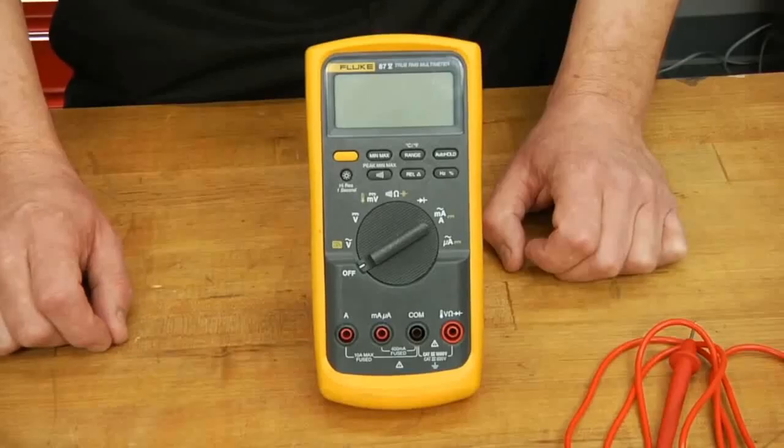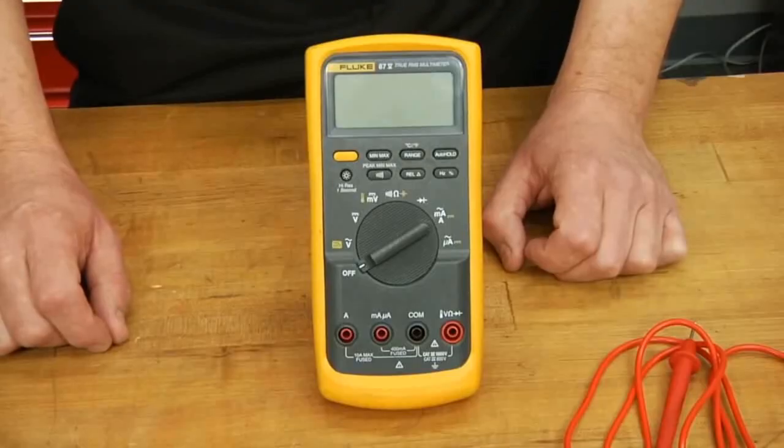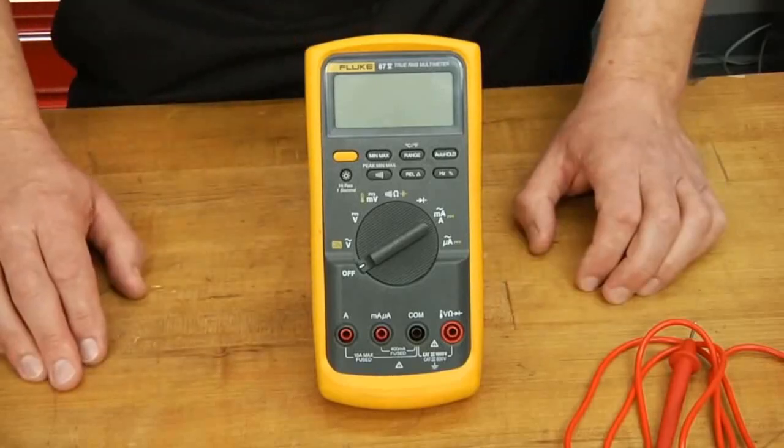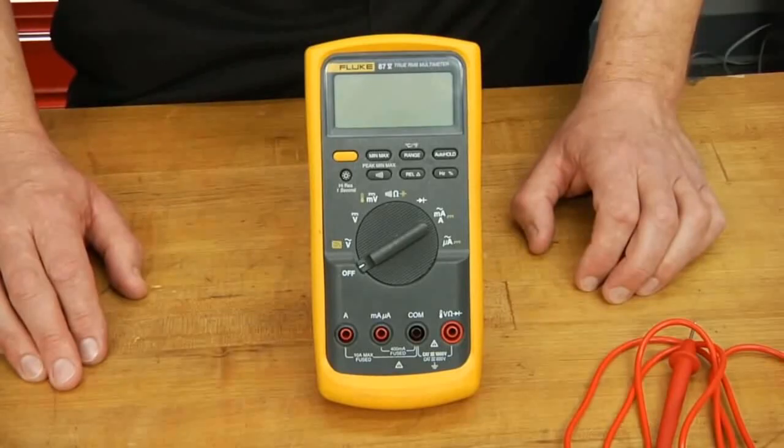Before we actually measure current on a circuit, let's talk a little bit about the tool we use to do that. For our purposes, we'll be using a Fluke 87 digital multimeter. Your meter may differ slightly, but the basic operation should be the same.